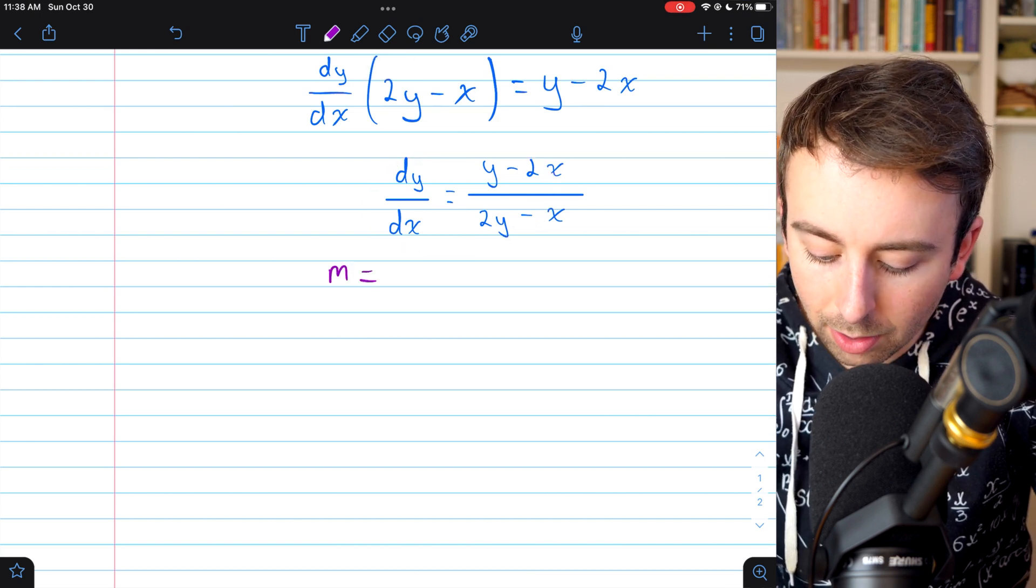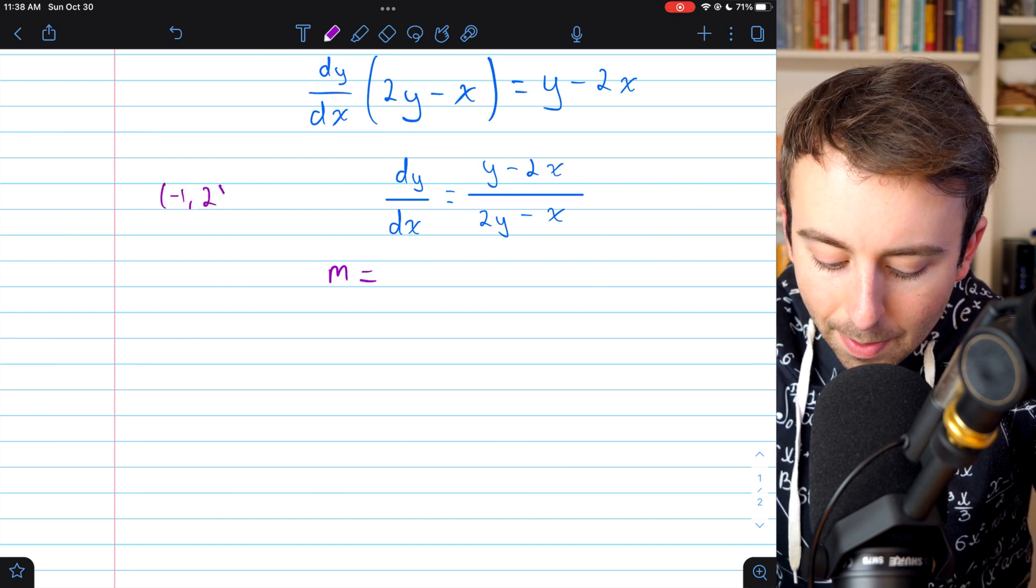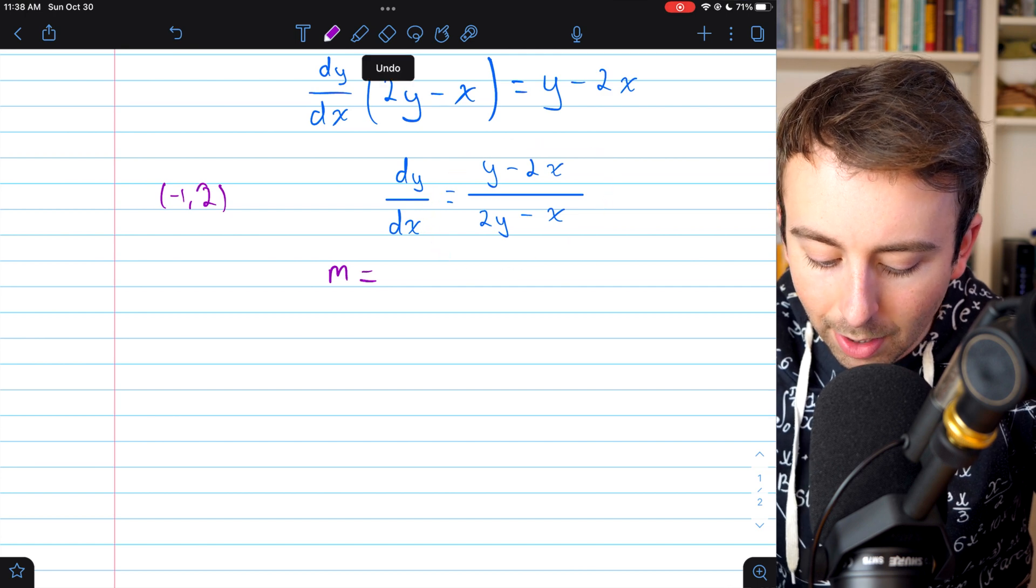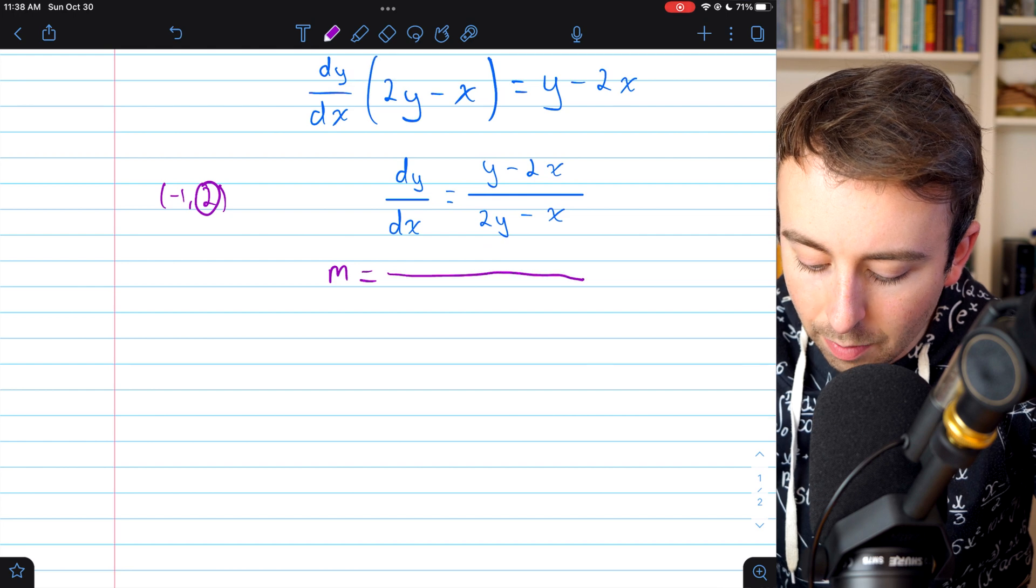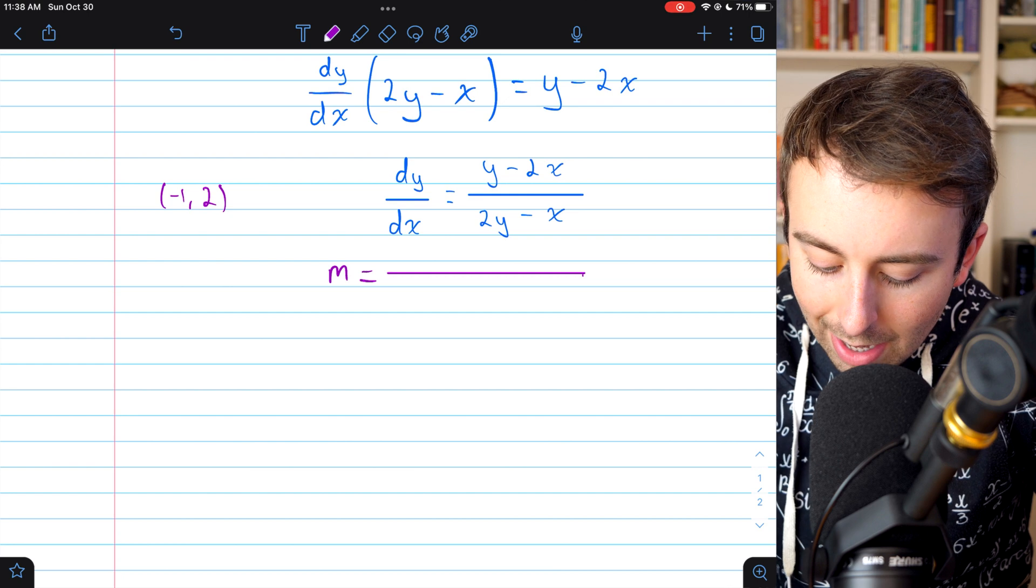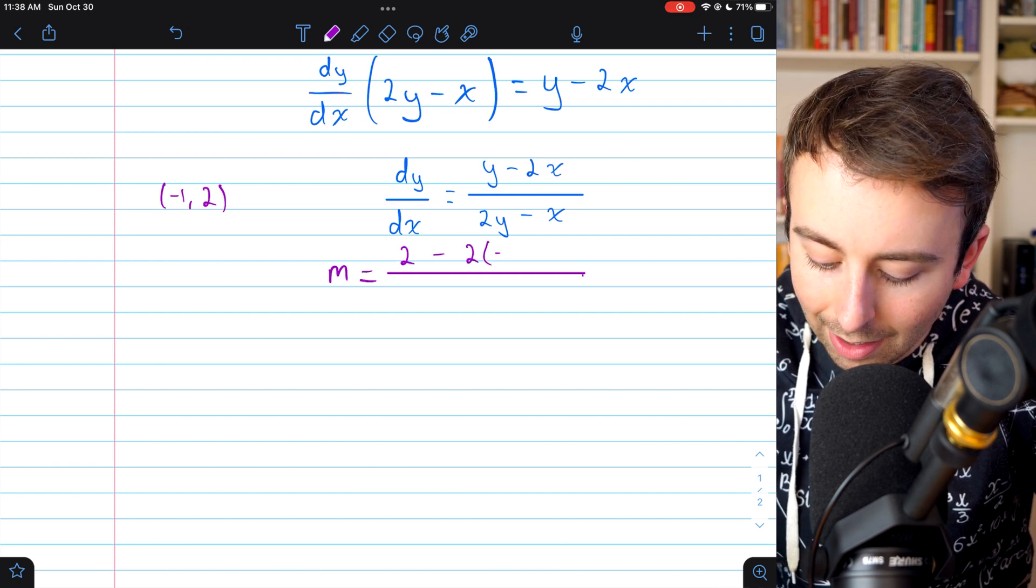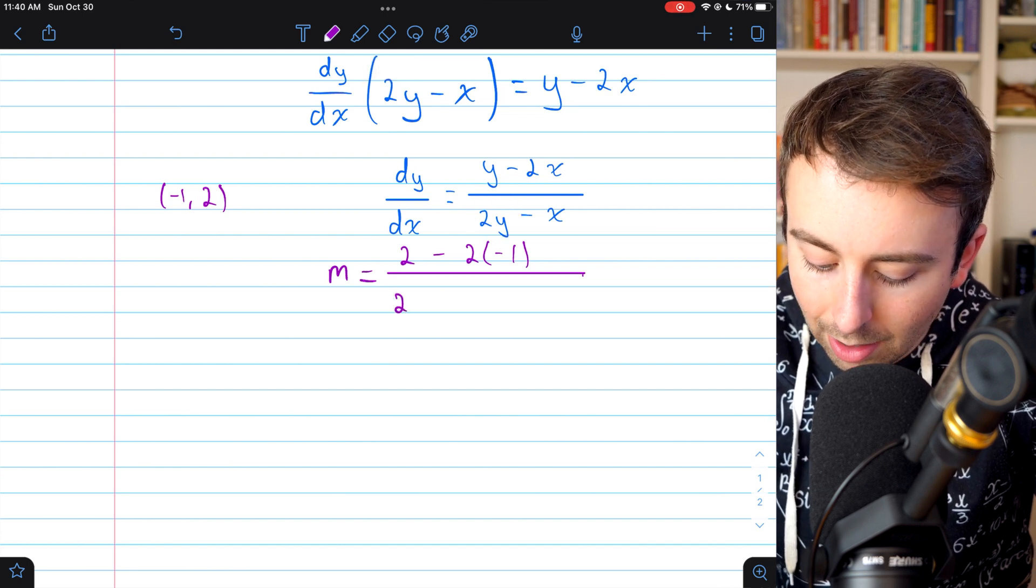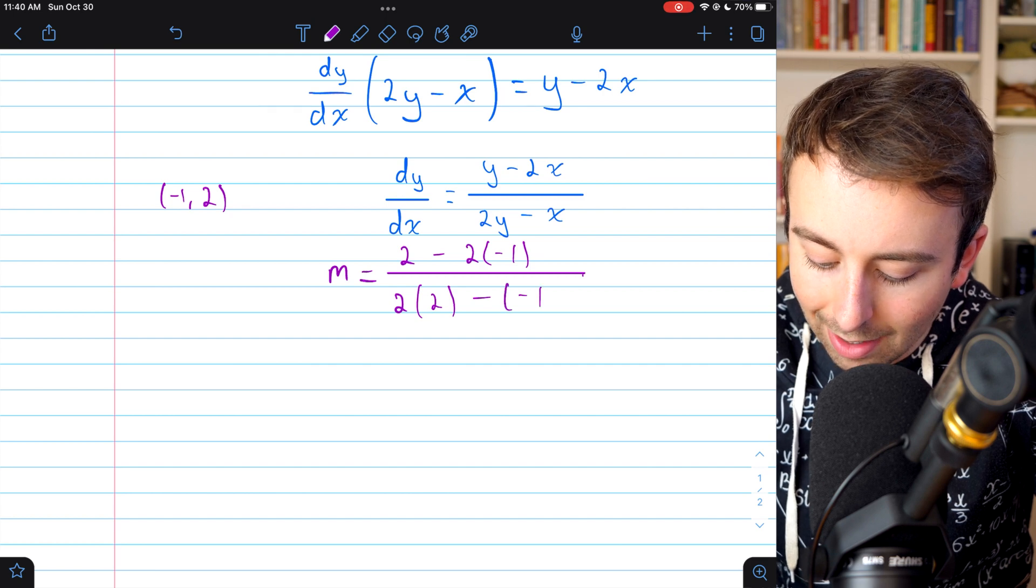So I'll write m equals... we need to plug -1 into the x's and plug 2 into the y's. So that's going to leave us with... Plug 2 into the y's. So we'll have y - 2 in the numerator, so we'll have 2 - 2 times x is -1, and then divide by 2 times y, so that's 2 times 2 minus x, so that's minus -1.